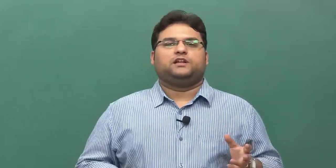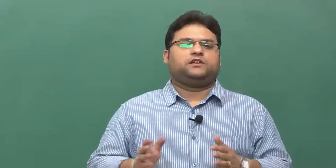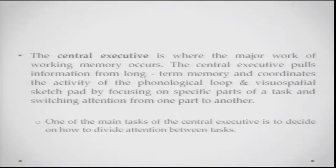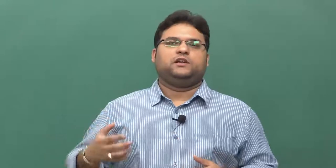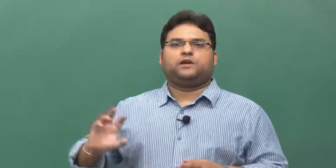The third component is the central executive, wherein the major work of working memory occurs. The central executive pulls information from long term memory and coordinates the activity of the phonological loop and the visuospatial sketchpad by focusing on specific parts of a task and switching attention from one part to another — like a desk secretary who decides where a particular file needs to go. One of its main tasks is to decide how to divide attention between tasks and which components will handle which parts.